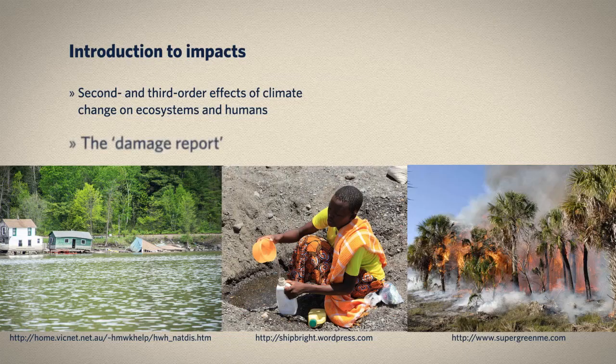We can think about impacts as chains of causation. Rising sea levels, for instance, are a second-order impact of increasing temperatures and occur primarily as a result of melting land-based glaciers and the thermal expansion of water. These rising sea levels can then lead to flooding, erosion damage, and altered ecosystem distribution — what we might call third-order impacts of climate change. In other words, climate change impacts are the damage report that results from the mass combustion of fossil fuels, and present monumental challenges to both human and natural systems.